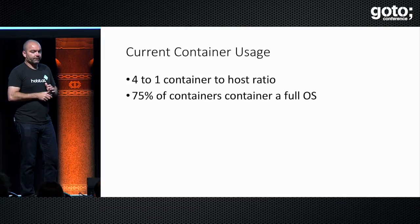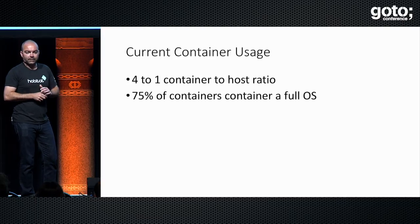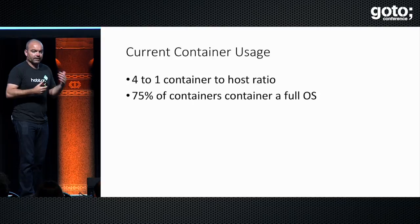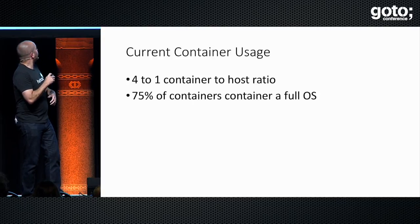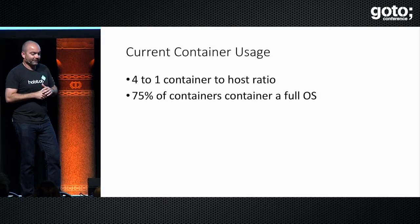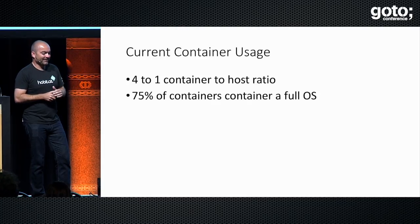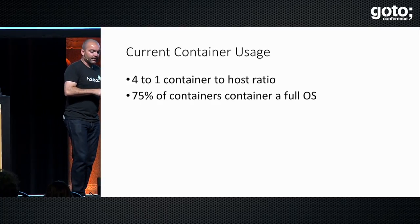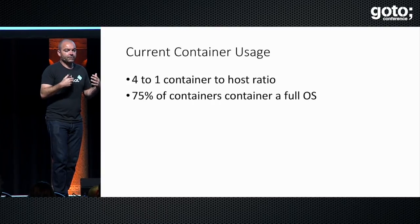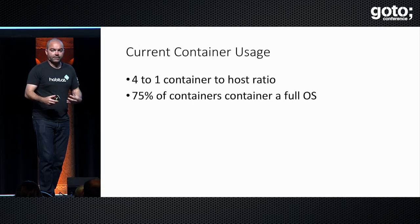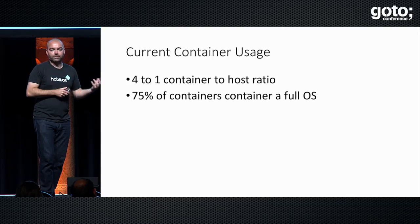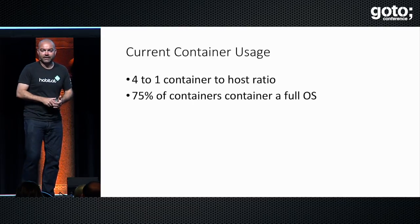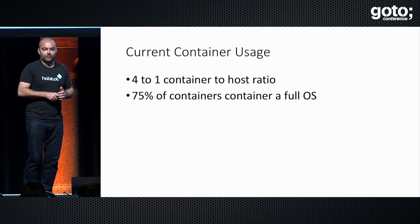Gareth Rushgrove — who runs a weekly email mailing list called DevOps Weekly and works for Puppet in Cambridge — did a study and found that 75% of containers contain a full OS. And another study, I believe a Datadog study, shows that current usage patterns give you only about a four-to-one container-to-host ratio. So for every VM you spin up, you're going to be able to run about four containers on it.